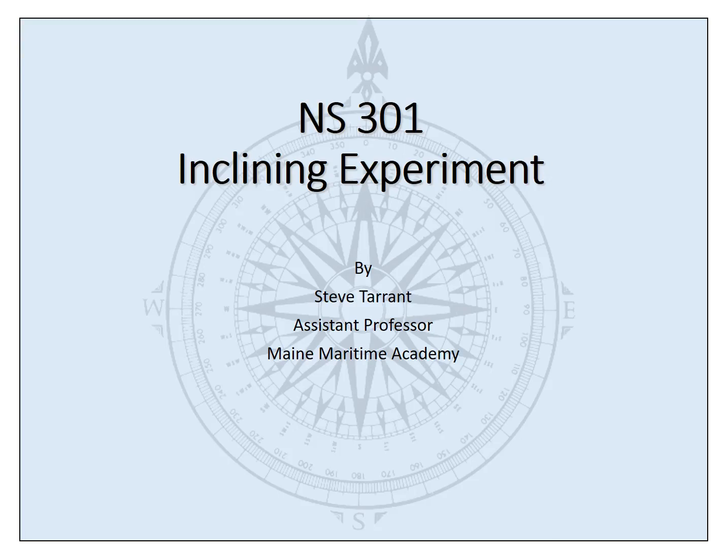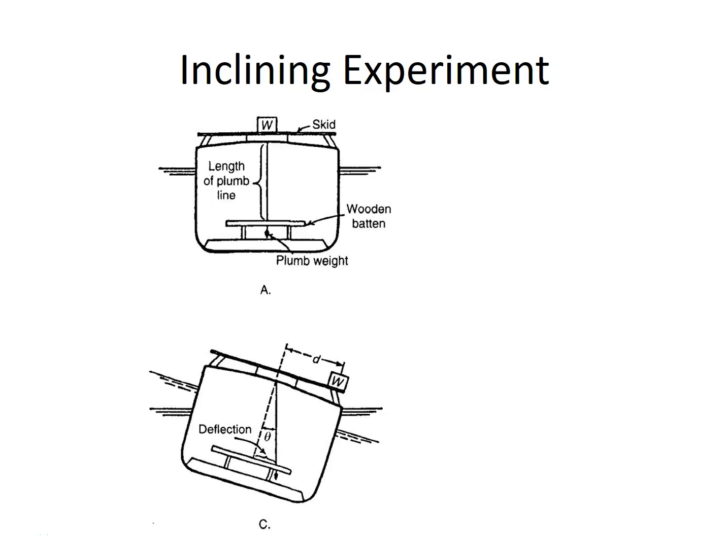Hello. In this video we're going to be exploring the inclining experiment. So the inclining experiment is typically done to determine the KG of the vessel. It can be done for the lightship of the vessel. Typically it's done for the lightship after a new build or after some kind of modification in a maintenance or yard period.